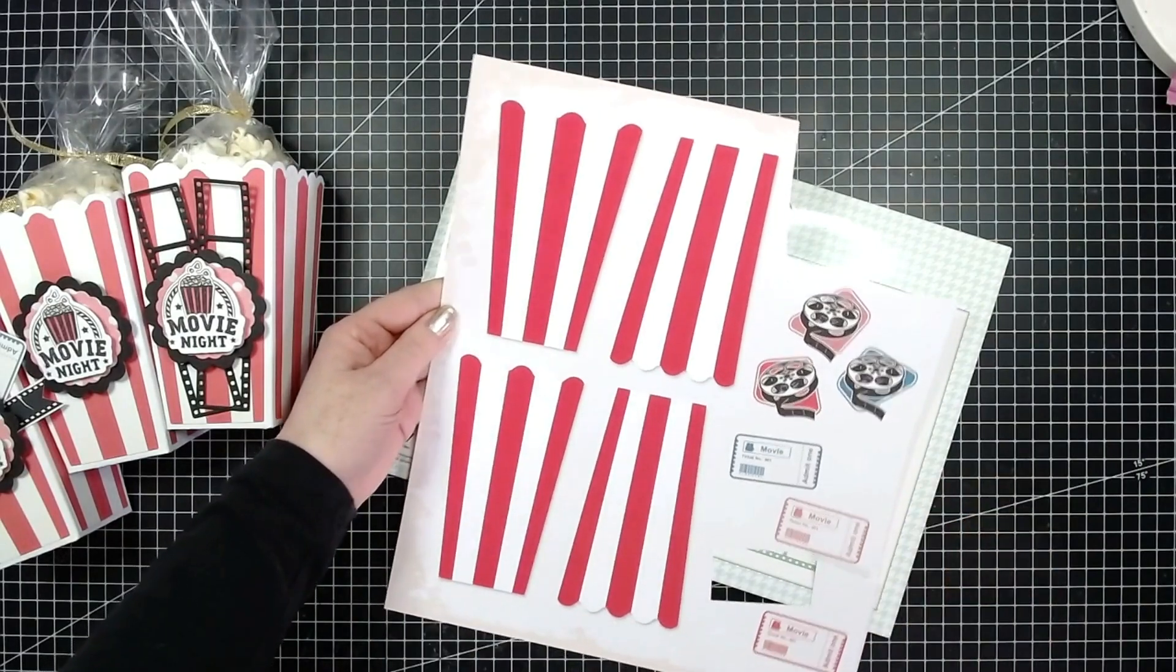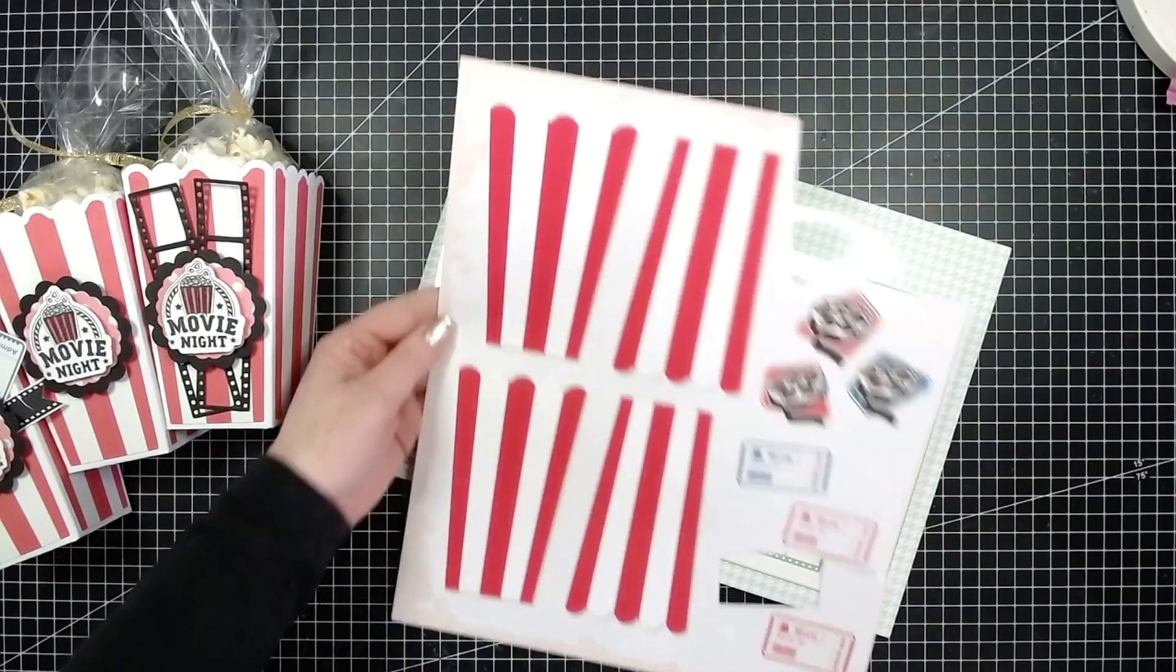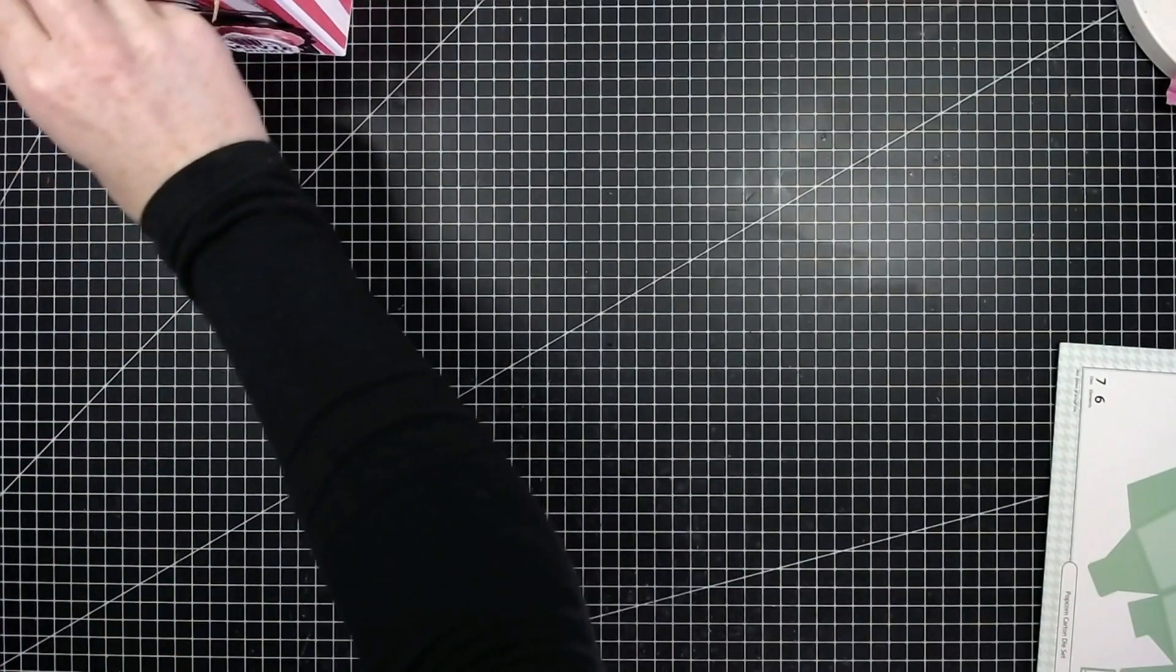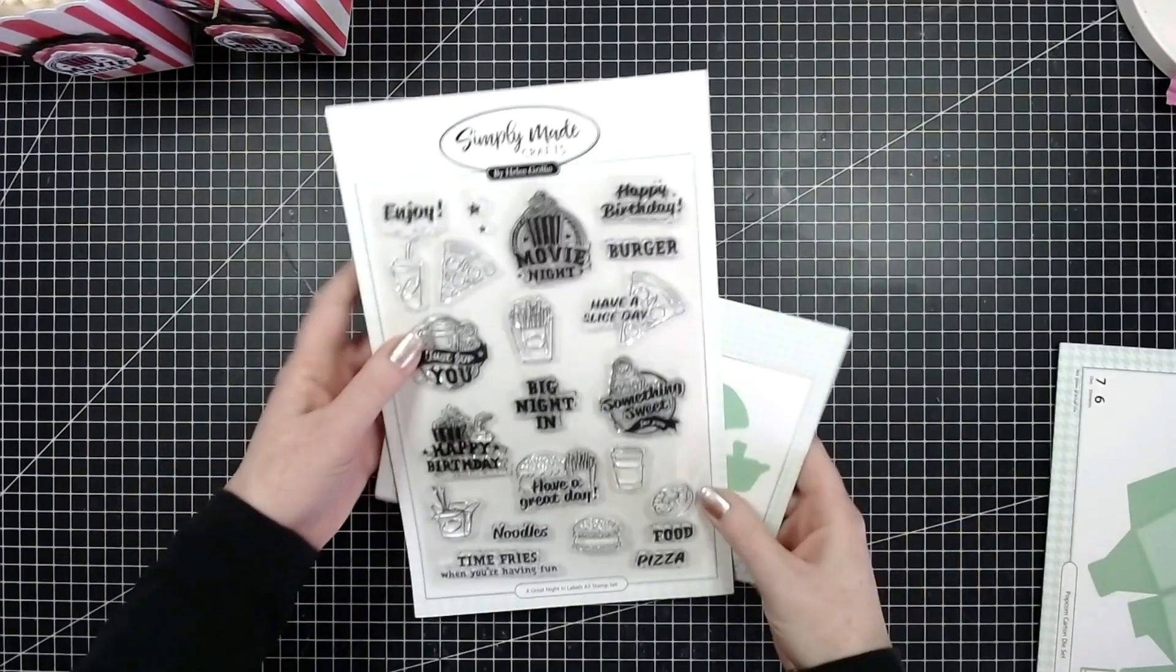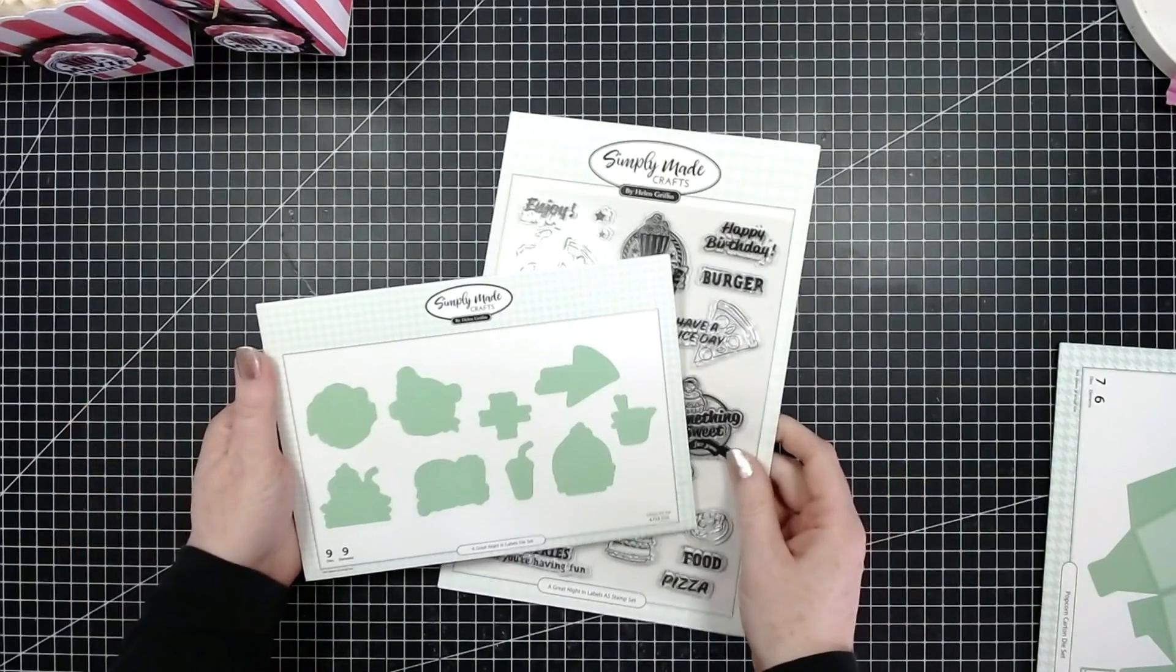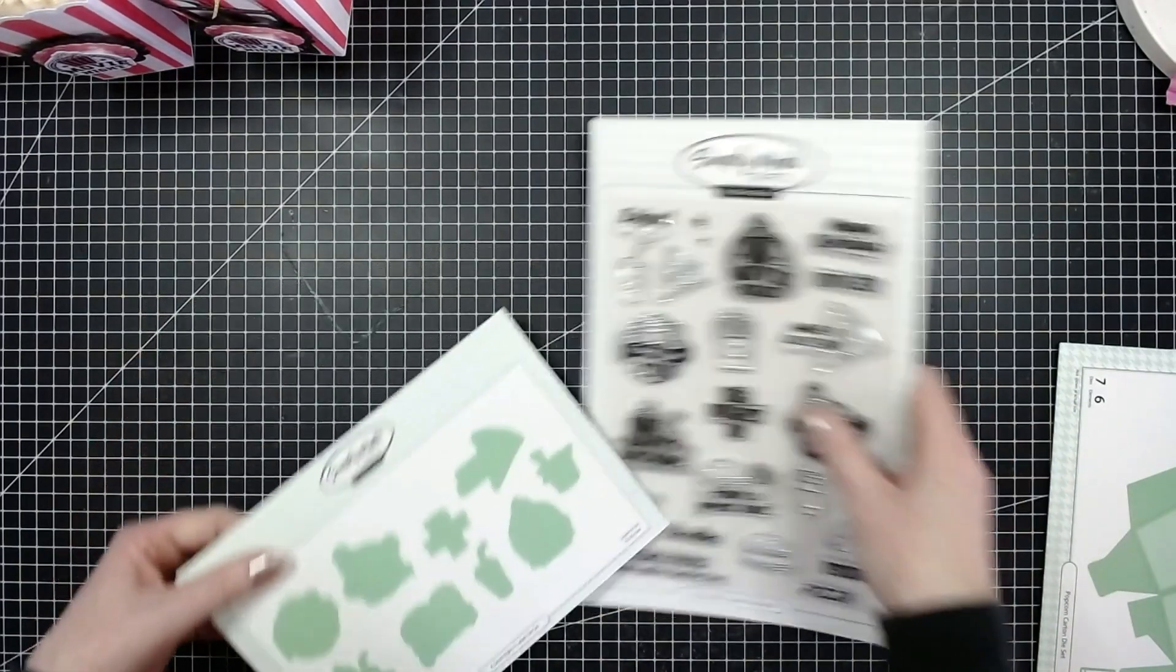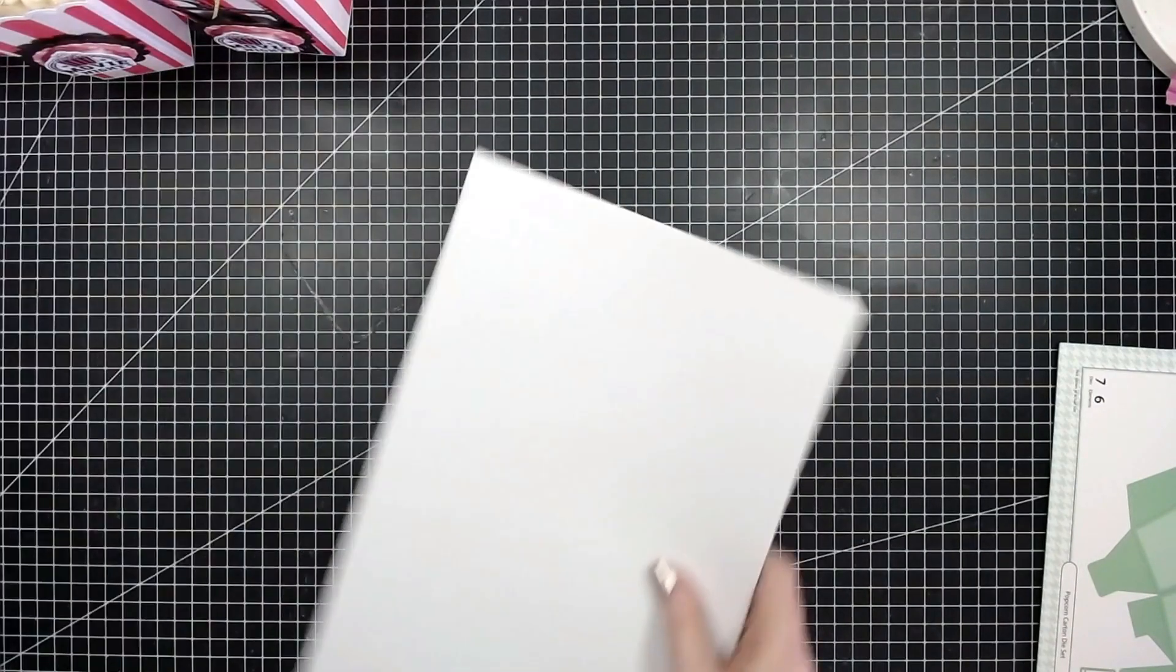You can just glue them on, fill them with popcorn, decorate how you wish, and you have some really easy popcorn boxes. You can personalize them as well. I'll also be using from the Great Night In the labels A5 stamp set and the coordinating dies that will cut out these images. Everything's just super easy to get ready for a great night in.